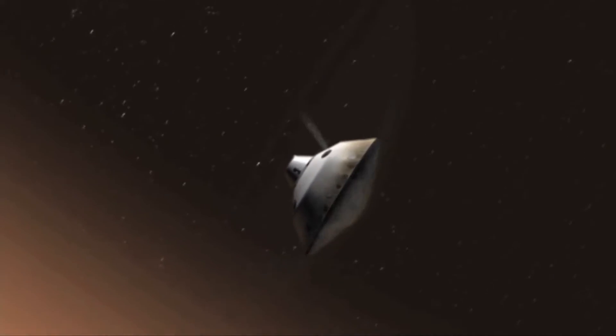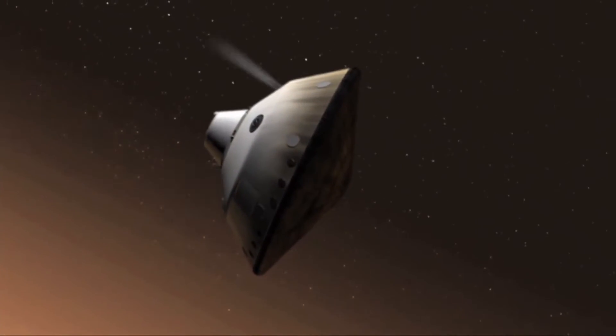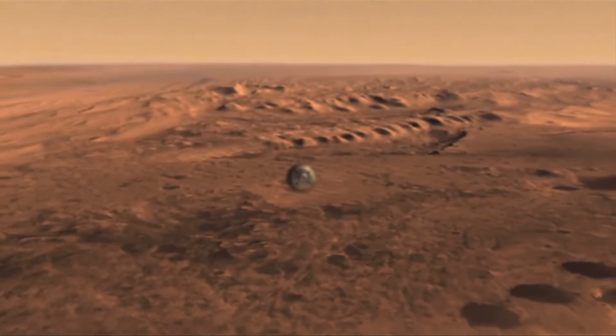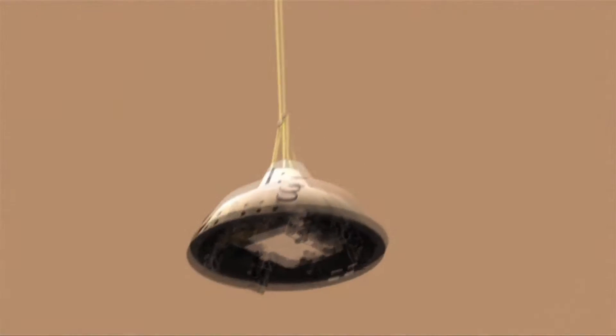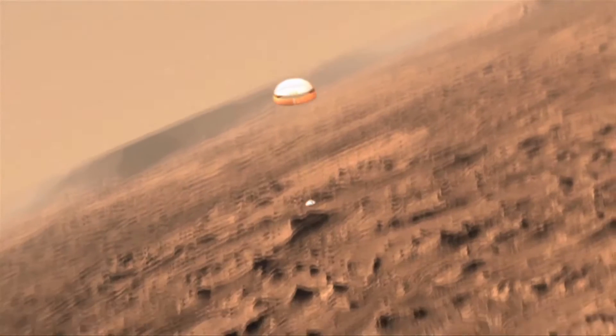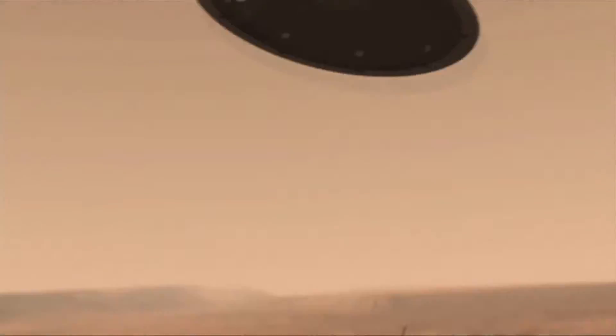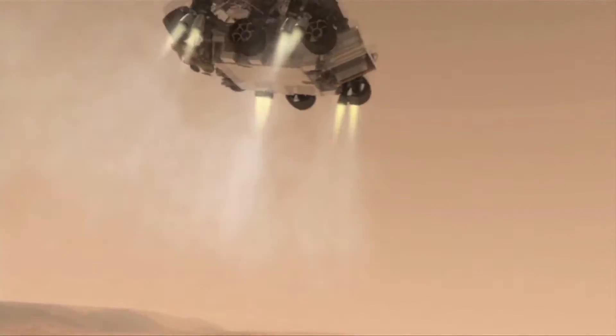They started off by hypersonic aeromaneuvering through the atmosphere to slow it down and steer its descent. It then uses a hypersonic parachute to slow down even more. Once it slows down enough, it ejects its heat shield and takes detailed sensor measurements of the surface of the planet. Once it knows where it is, it ejects from the back shell and comes down on rockets.